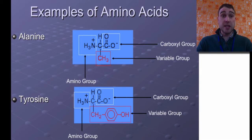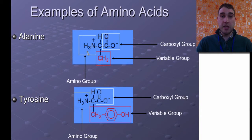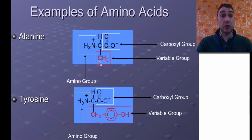Here are some examples of some amino acids. Here we have alanine. If we look at alanine we can see we've got the amine group here, the carboxyl group over here, and then we've got the variable group down here. In this case the variable group is just a methyl group.